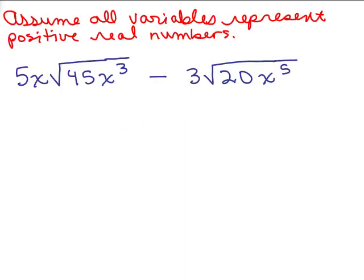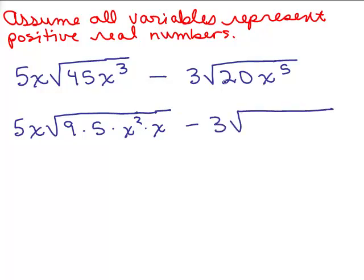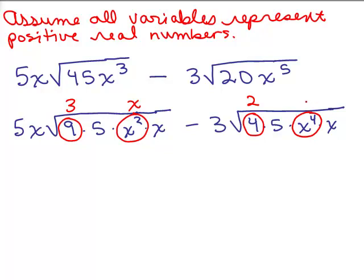We're going to step it up. For this problem, we're going to assume all variables represent positive real numbers. This way we don't have to worry about any absolute value signs. So for this first problem, we have two terms and we need to simplify what's underneath the square root. I have 5x times, for 45 I could write that as 9 times 5, and x cubed I could write as x squared times x. On the second term, 20 is 4 times 5, and since I've got x to the fifth, I could write this as x to the fourth times x. Let's pull out what we can. Square root of 9 is 3, square root of x squared would be x. Square root of 4 would be 2, and square root of x to the fourth would be x squared. Remember, you take half the exponent.